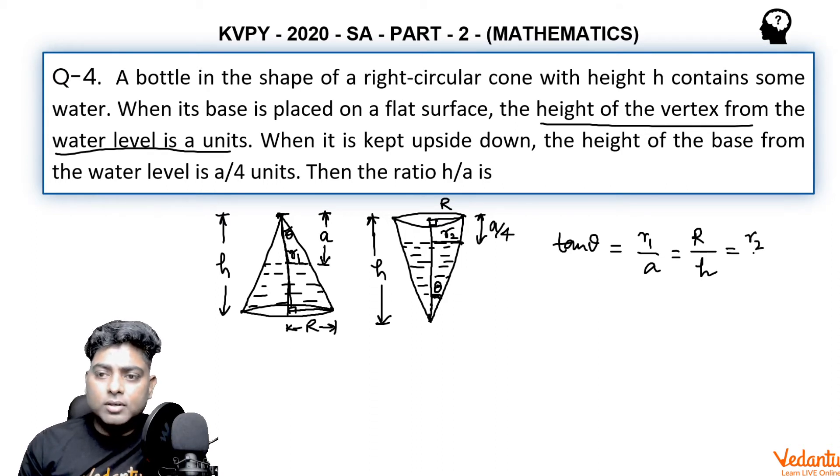From the second triangle, capital R upon h is the same tan theta, which equals r2 upon the remaining height, h minus a by 4. Now one thing is common in both figures: the water volume is the same in both cases.